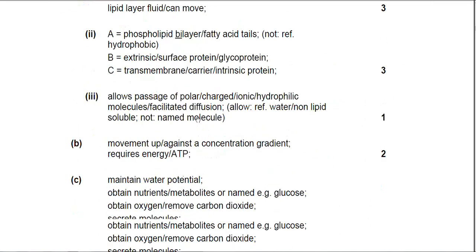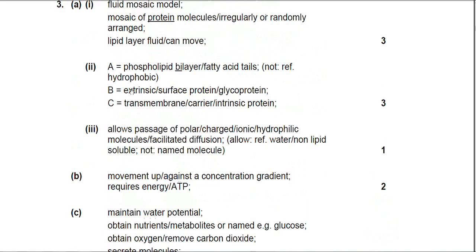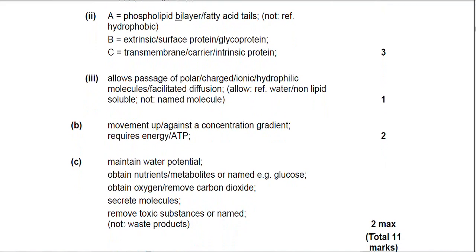If we have a quick look at the mark scheme, then there it is. Fluid mosaic model talking about the patterns created by the proteins and the lipids, phospholipids are fluid. Part two I think is straightforward. Part three is fine about the channel protein. What's meant by active transport? Shouldn't be any problem with that. And then lastly, part C about the importance of membrane transport to cells. So there's the examiner's marking points for part C. So that's question three.